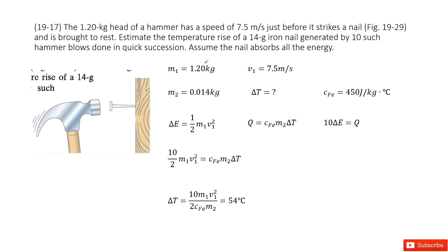So there we can see we have a hammer. This hammer's mass is given. We write it as M1 = 1.20 kg. And it has a speed of 7.5 m per second. So we write it as V1, right? And then it just hit a nail.